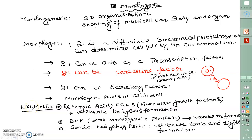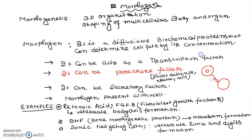Hello everyone, today I will discuss one of the important topics of CSIR NET syllabus, that is morphogen gradient. Morphogenesis is the 3D organization and shaping of the multicellular body and organs. A morphogen is a diffusible biochemical protein that can determine cell fate by its concentration.